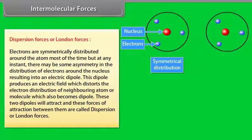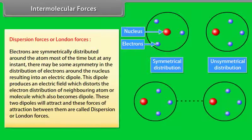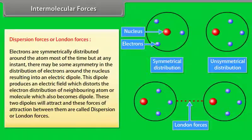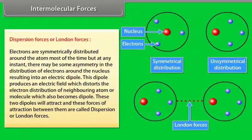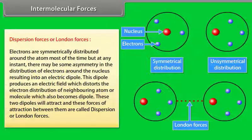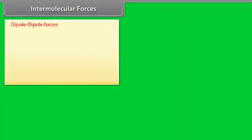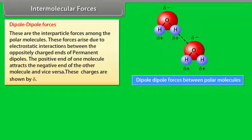Dispersion forces or London forces: most of the time, electrons are symmetrically distributed around the atom, but at any instant there may be some asymmetry in the distribution of electrons around the nucleus, resulting in an electric dipole. This dipole produces an electric field which distorts the electron distribution of a neighboring atom or molecule, which also becomes a dipole. These two dipoles attract, and these forces of attraction are called dispersion or London forces. They occur in non-polar molecules and even noble gases.